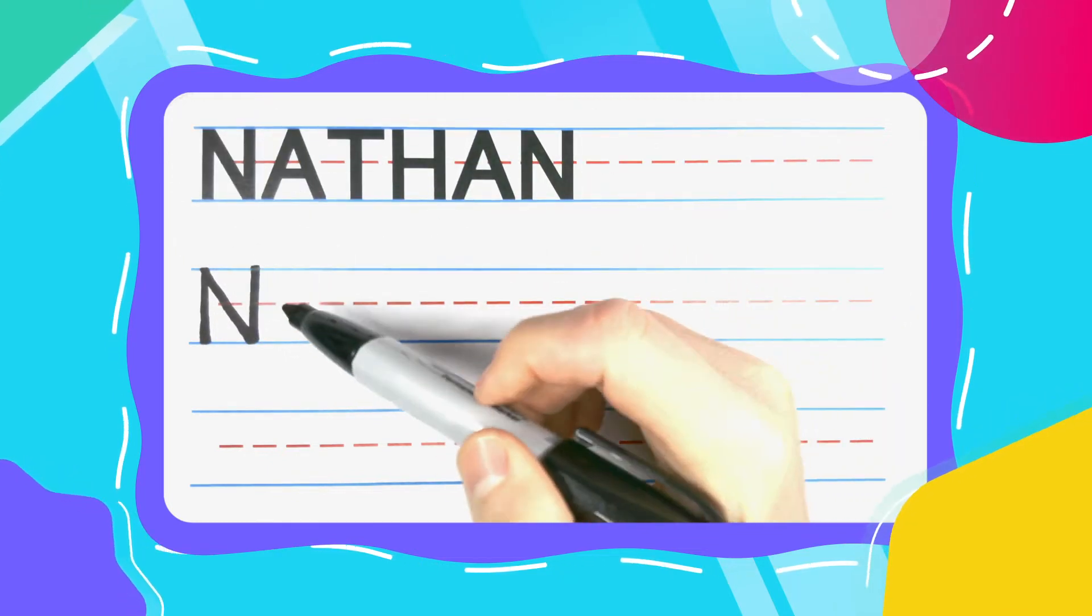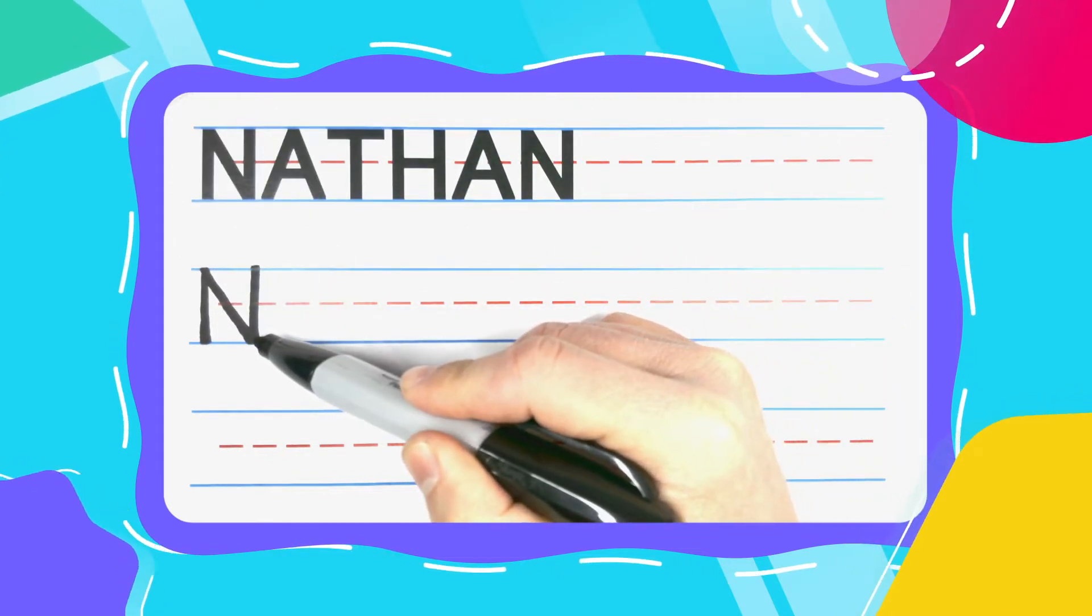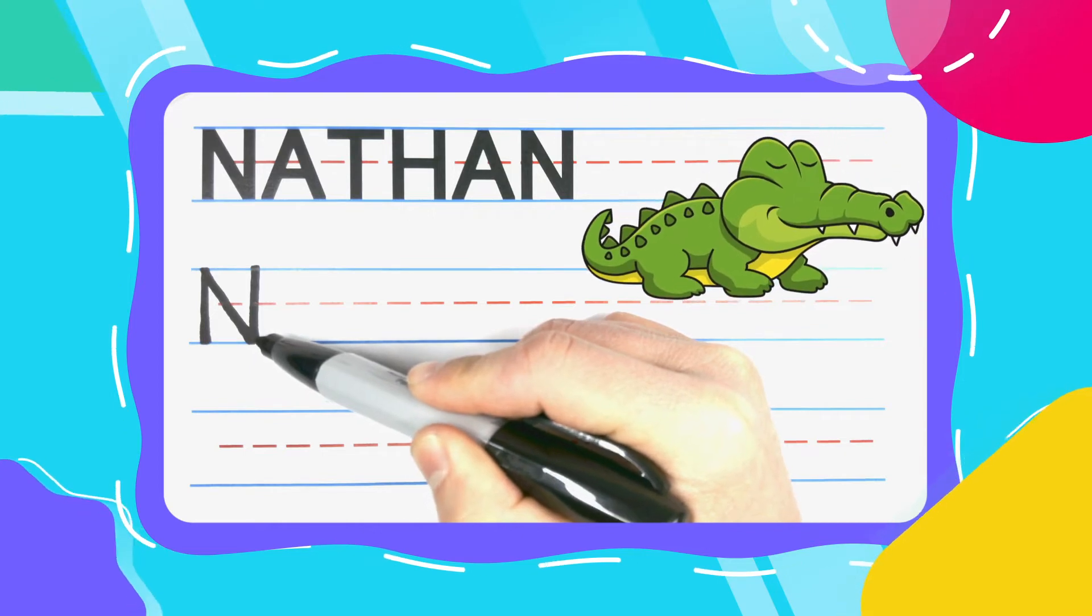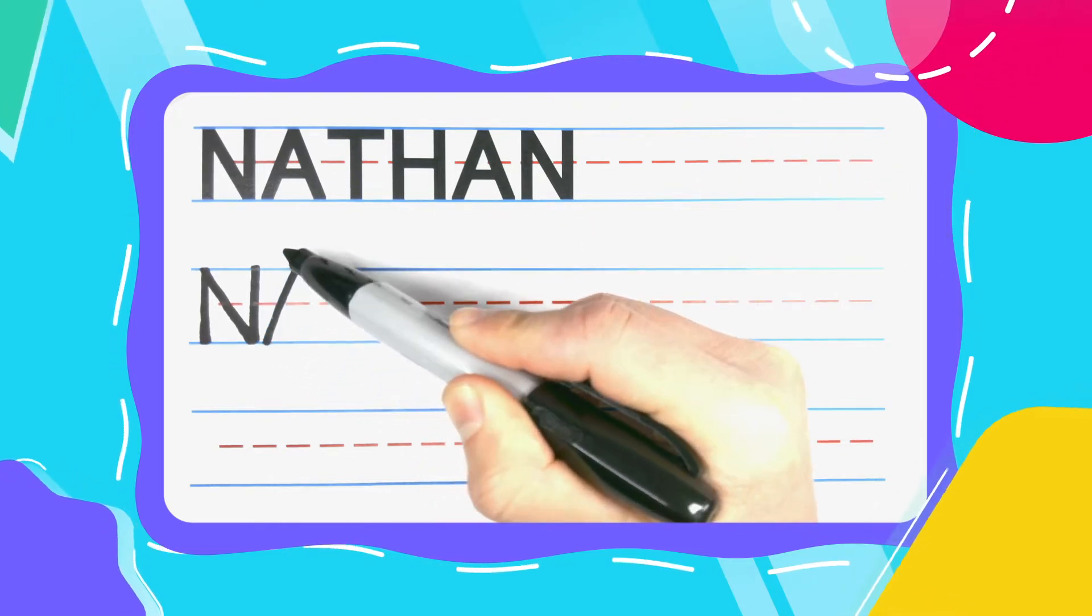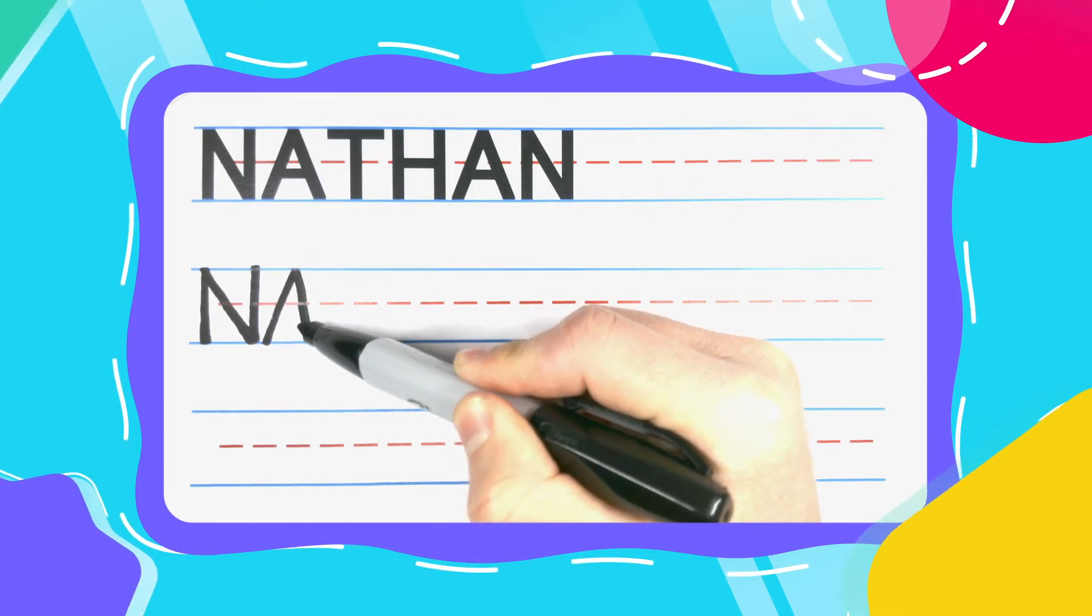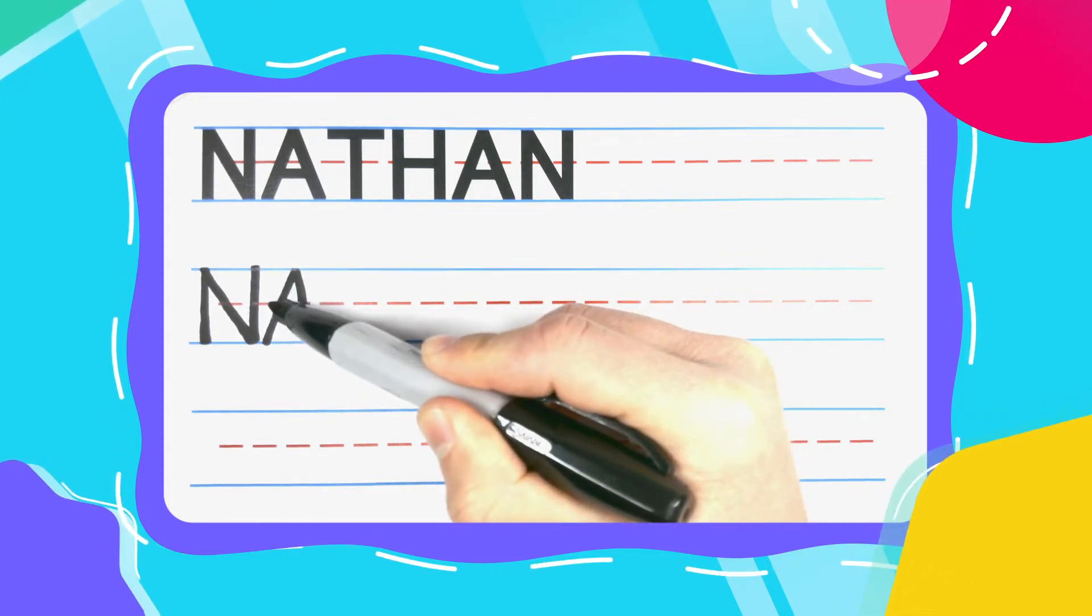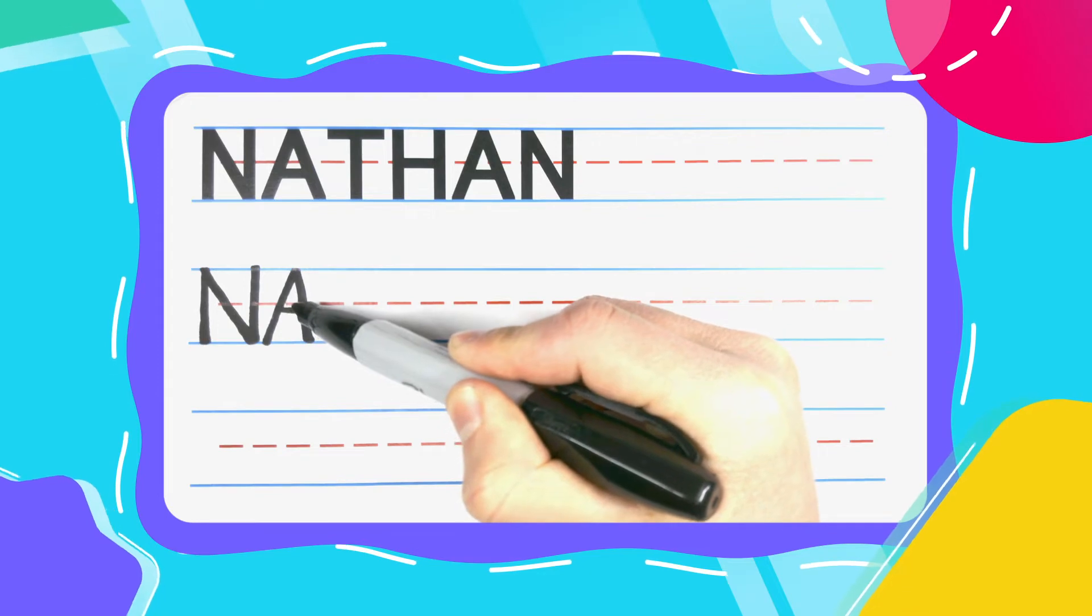The next letter in Nathan is the alligator A. Start your alligator A by drawing an upside down alligator mouth. Diagonal up to the top, and diagonal back down to the bottom. Connect your A with a straight line in the middle.